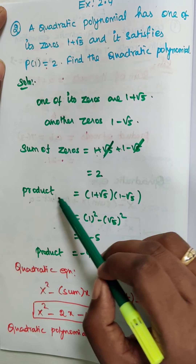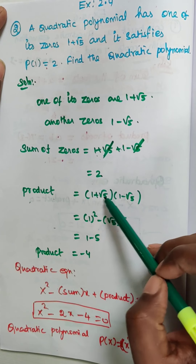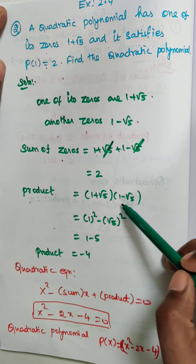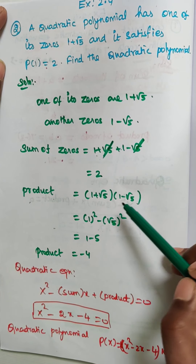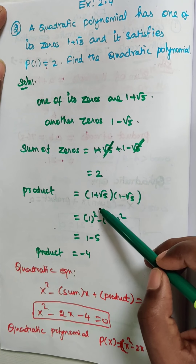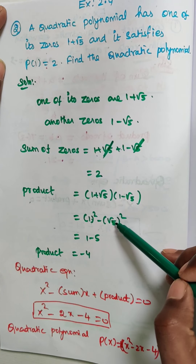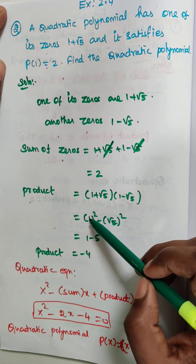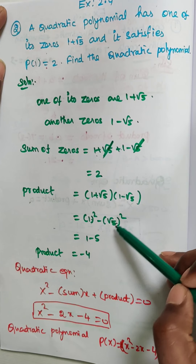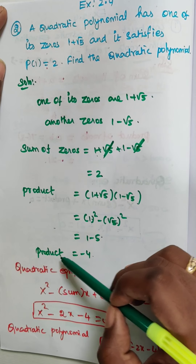The product of zeros is equal to 1 plus root 5 into 1 minus root 5. This is in the form of a plus b into a minus b, which equals a square minus b square. So a square is 1 square and b square is root 5 square. Therefore 1 minus 5 equals minus 4.